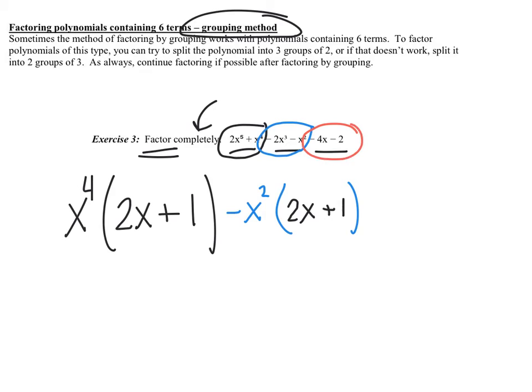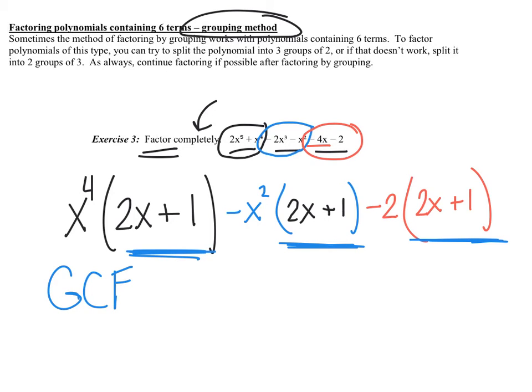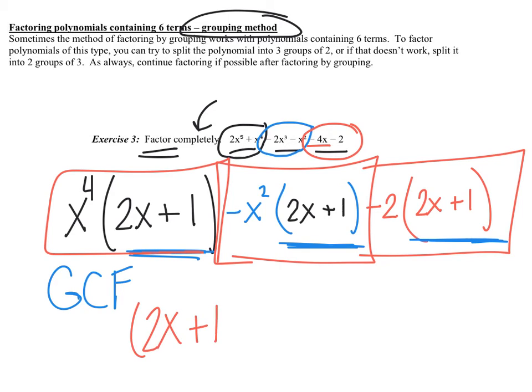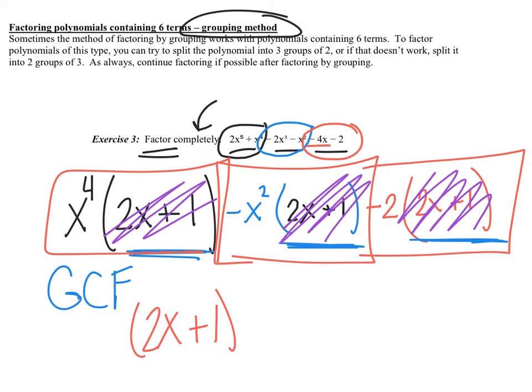Now, go to the last set. It looks like I can pull out a 2, but do I want a positive 2 or a negative 2? I'm going to try a negative 2. Negative 4x divided by negative 2 is positive 2x. Negative 2 divided by negative 2 is positive 1. Those have to be the same. Now, we're going to pull out the GCF. From this term, this term, and this term, I'm pulling out 2x plus 1. So, now what's left? x to the 4th minus x squared minus 2.